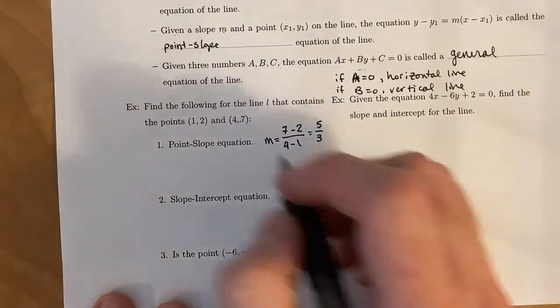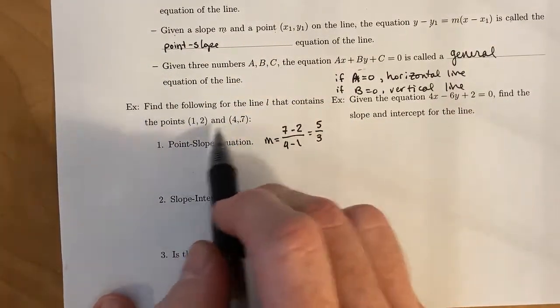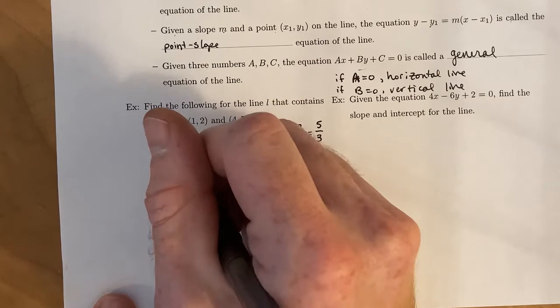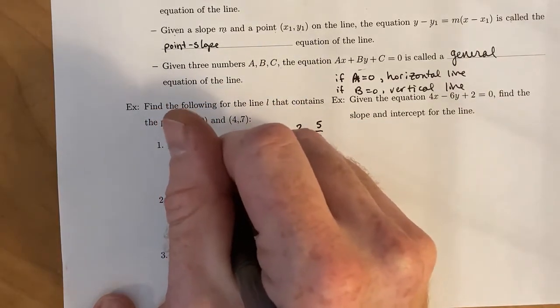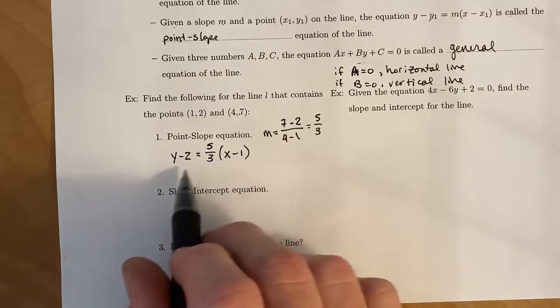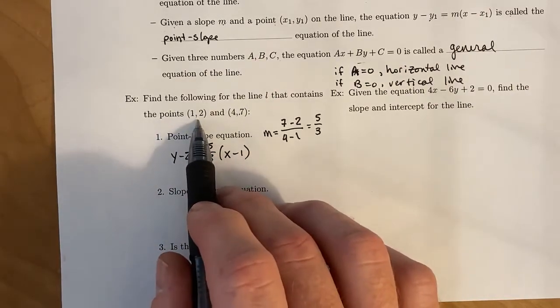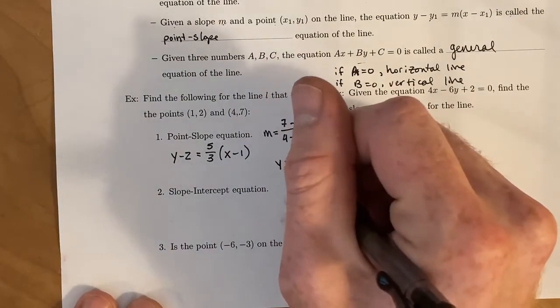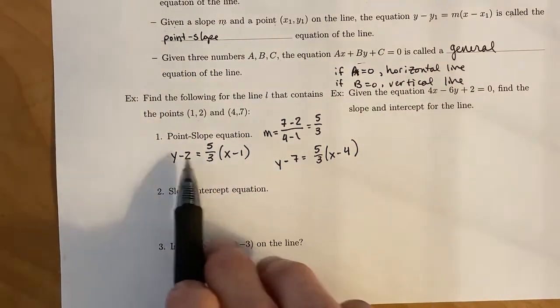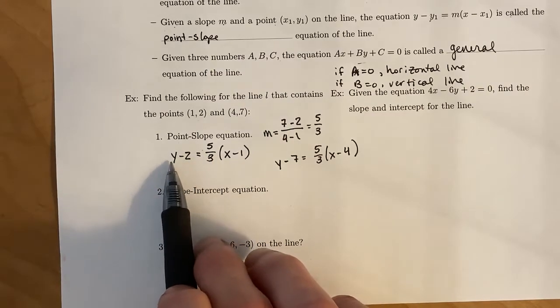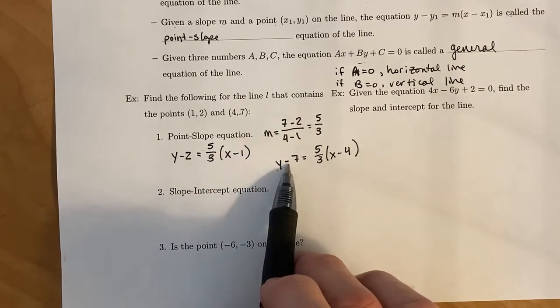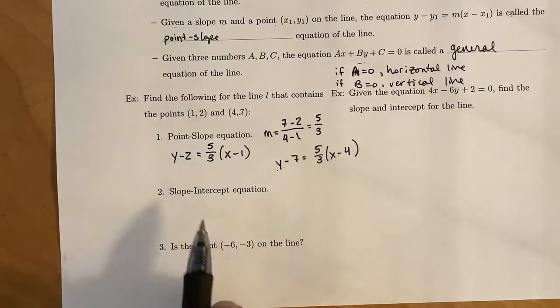All right, so now that we have the slope, we can choose either one of these to make the equation of the line. Why don't we choose the first one? So if we did y minus 2, that's equal to 5 thirds x minus 1. That is a point-slope equation of this line. If, on the other hand, you chose 4, 7, it would look like y minus 7 is equal to 5 thirds x minus 4. Now these two may look different, but if you solve for y in each of these, you will get the same exact equation. In fact, if you solve for y in either of these, you'll end up getting the slope-intercept equation of the line.